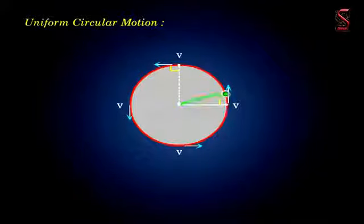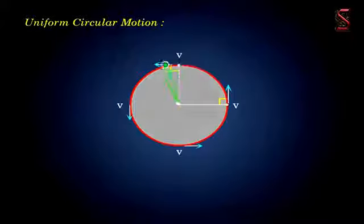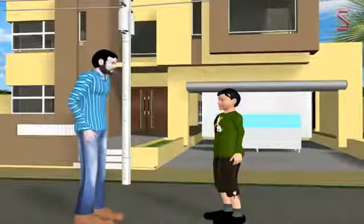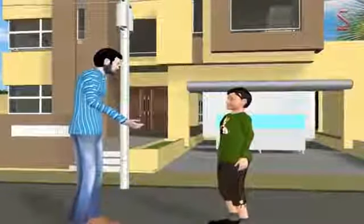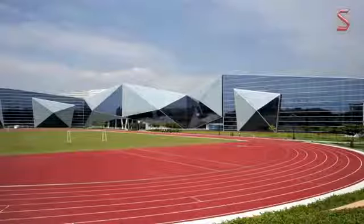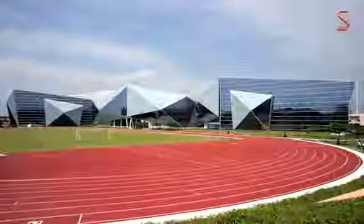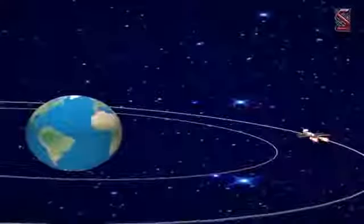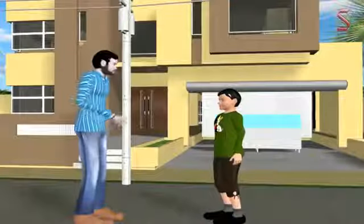In uniform circular motion, the speed of the object is always constant but its direction is continuously changing, so the velocity changes and as a result the object has acceleration. Examples from daily life include a merry-go-round with constant speed, an athlete running in a circular path at consistent speed, artificial satellites moving around the earth, and the earth moving around the sun.